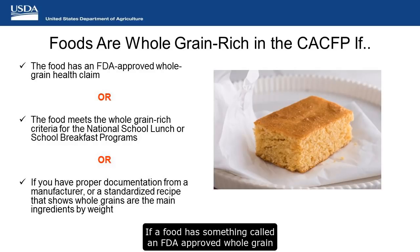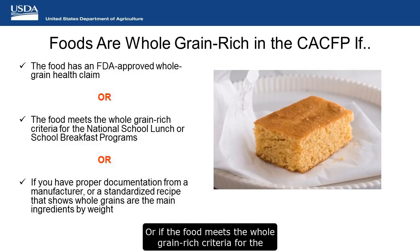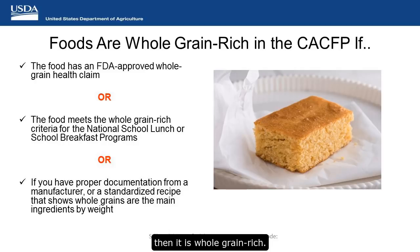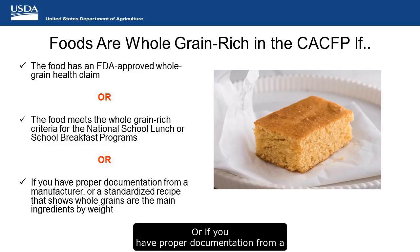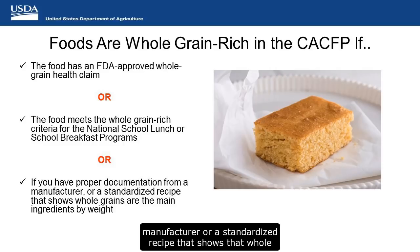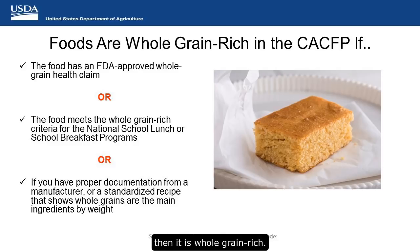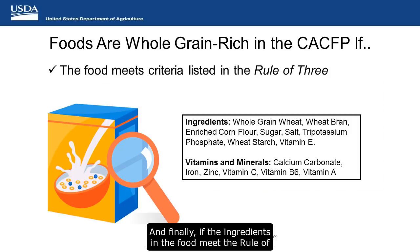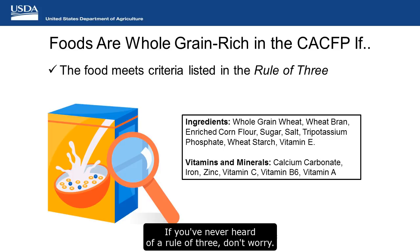If the food has an FDA approved whole grain health claim, then it is whole grain rich. Or if the food meets the whole grain rich criteria for the National School Lunch Program or breakfast program, then it is whole grain rich. Or if you have proper documentation from a manufacturer or a standardized recipe showing that whole grains are the main grain ingredient by weight, then it is whole grain rich. And finally, if the ingredients meet the rule of three, then it is whole grain rich. If you've never heard of the rule of three, don't worry — it will be the focus of today's webinar.